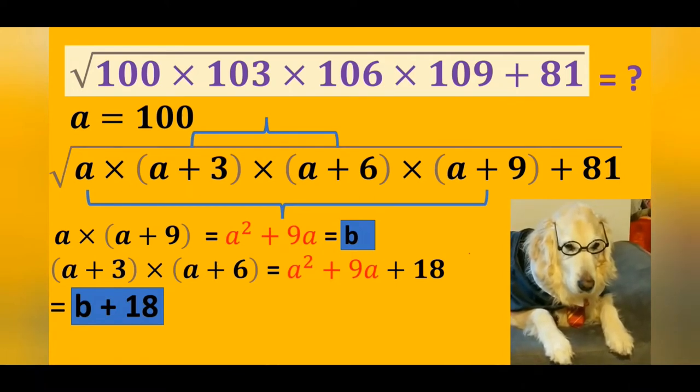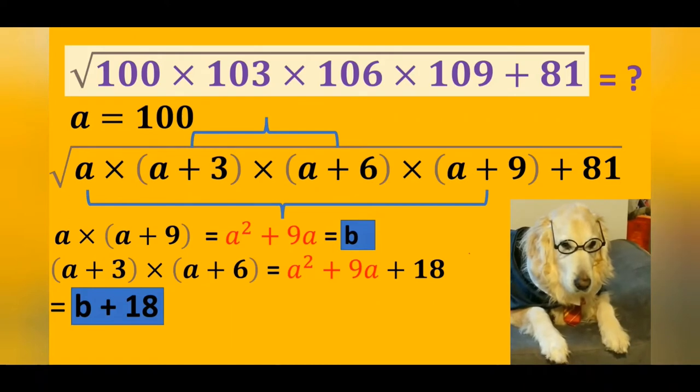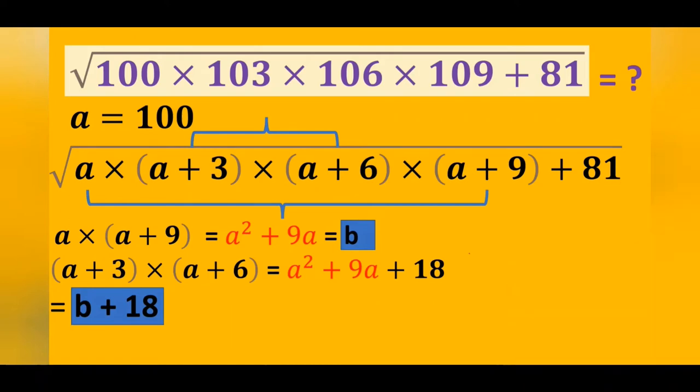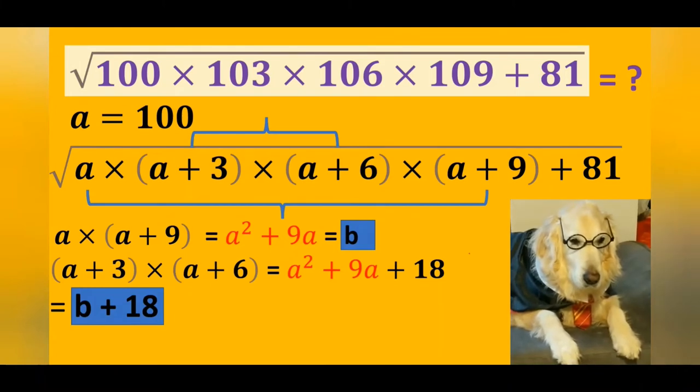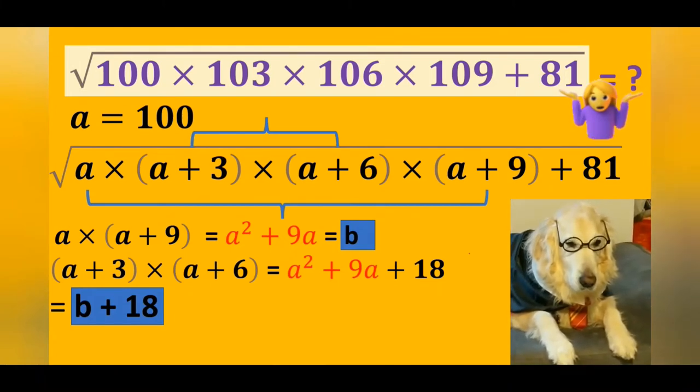If b is equal to a squared plus 9a for the first product, then we get b plus 18 for the second product. Is it okay mom? Yes sweetie. Let's continue then.